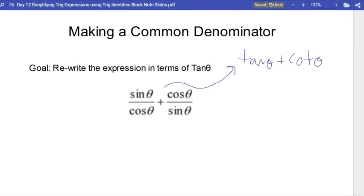Tan is sine over cosine. Cotan is cosine over sine. It doesn't help because we need to write the expression in terms of just tan.